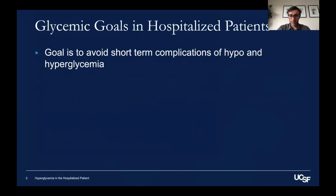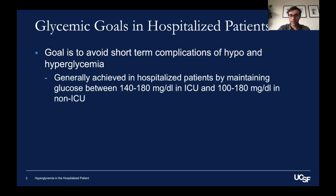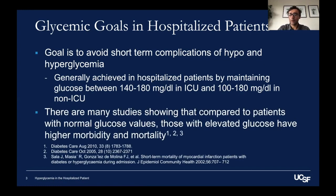In general, in hospitalized patients, what we want to do is avoid the extremes. We want to avoid severe hypoglycemia as well as hyperglycemia. For ICU patients, we try to keep their glucose between 140 to 180 milligrams per deciliter. For non-ICU patients, we try to keep their glucose between 100 and 180 milligrams per deciliter. We do this because people who have elevated glucose values in the hospital have higher morbidity and mortality.